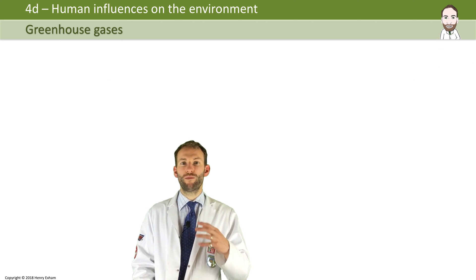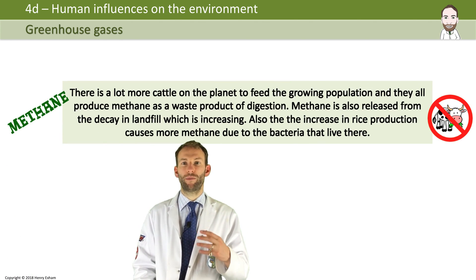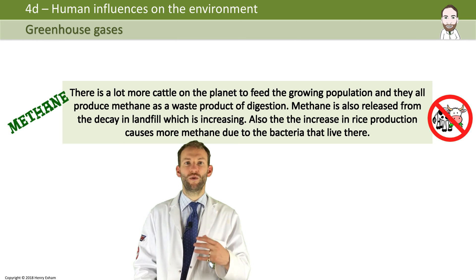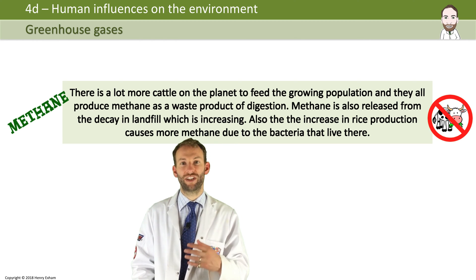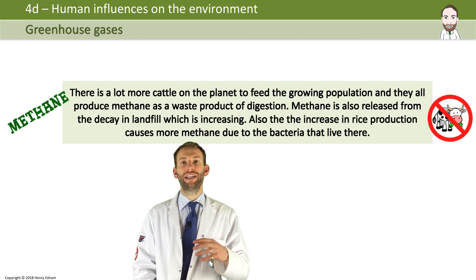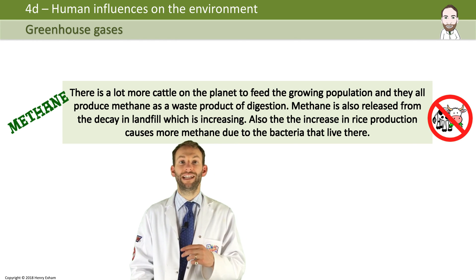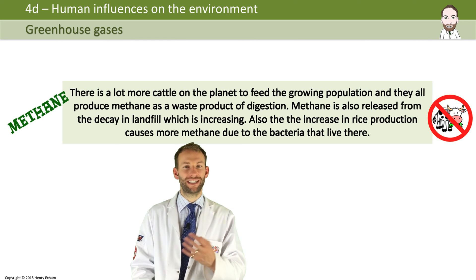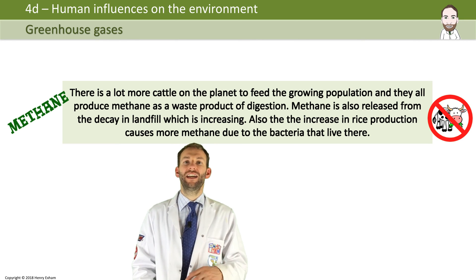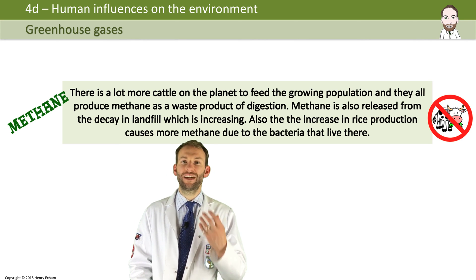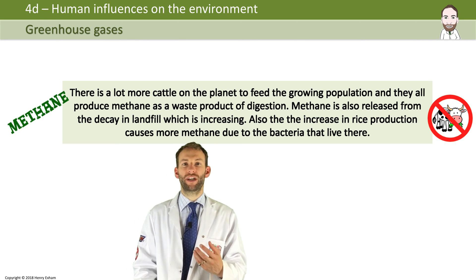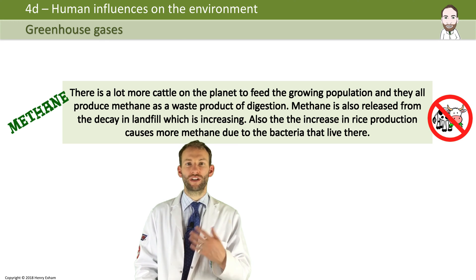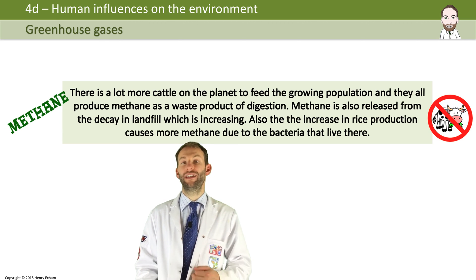Methane: there are a lot more cattle on the planet to feed the growing population, and they all produce methane as a waste product of digestion. Methane is also released from the decay of waste in landfill, which is increasing due to all the waste we produce. Additionally, the increase in rice production causes a lot more methane due to the bacteria that live there.